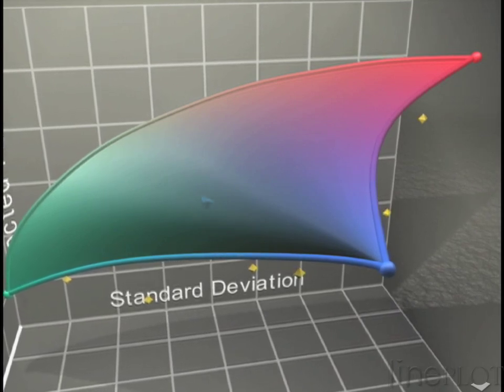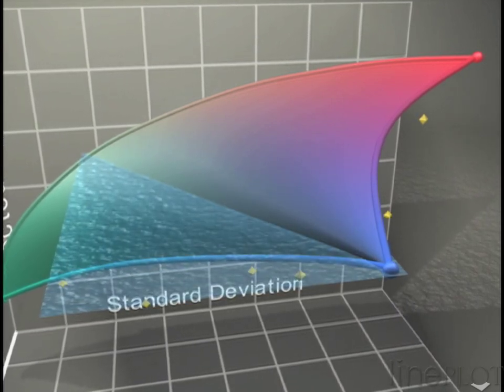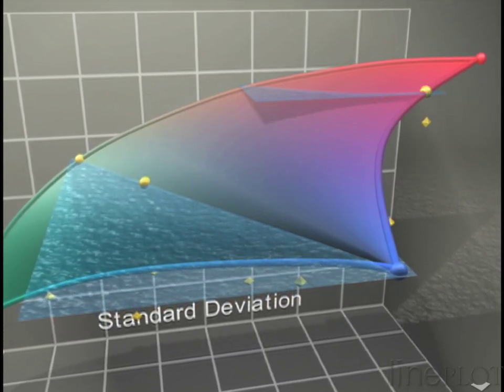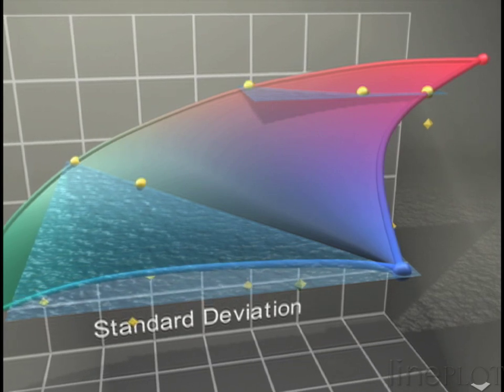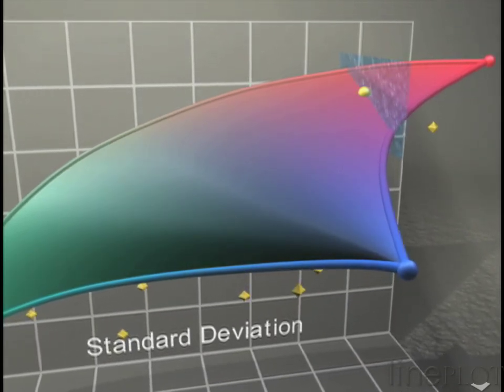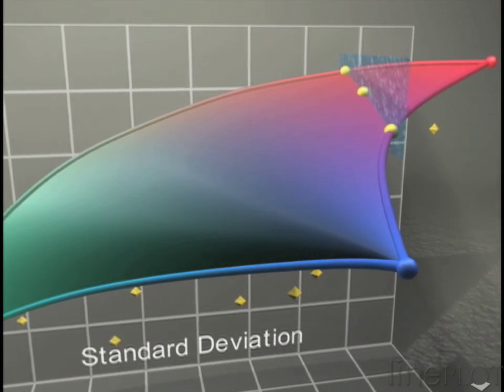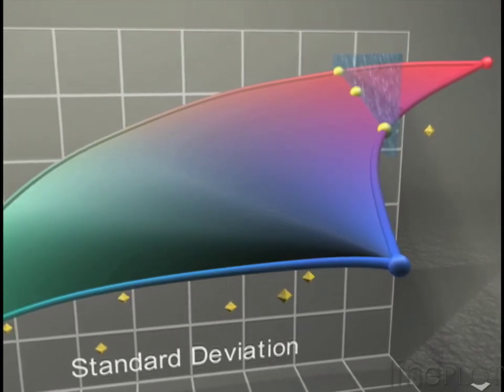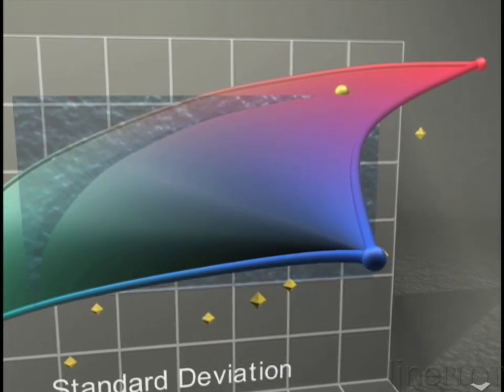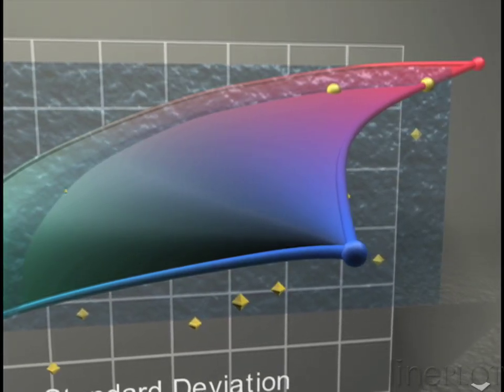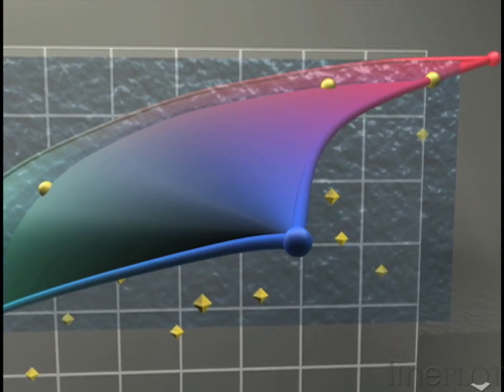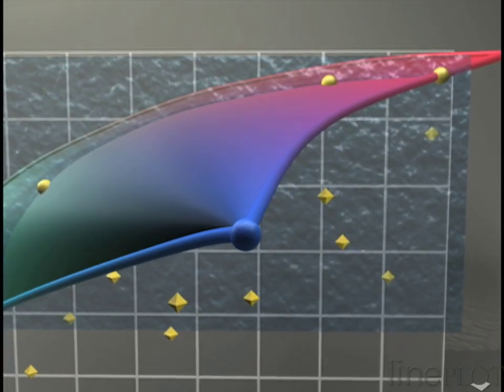We can slice the efficient surface through an array of portfolios that have the same expected return but different combinations of standard deviation and tracking error. We can also identify portfolios that have the same standard deviation but different combinations of expected return and tracking error. The same is true for tracking error. We can slice the efficient surface through an array of portfolios with the same tracking error but different combinations of expected return and standard deviation.